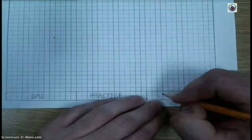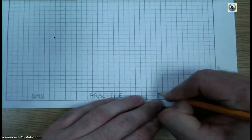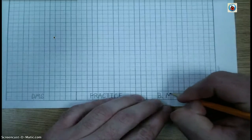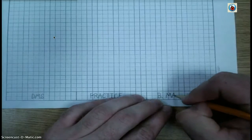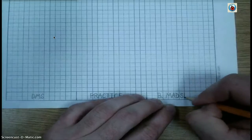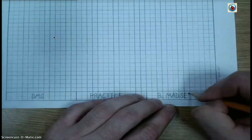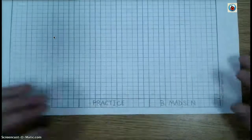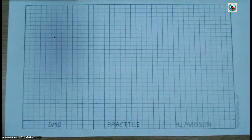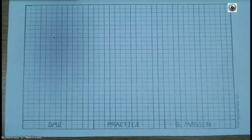And then you're going to sign all of your drawings: first initial, period, last name. Do not write "B. Madsen" on yours—you're going to write your name, first initial, period, last name. And this drawing is set up and ready to go.